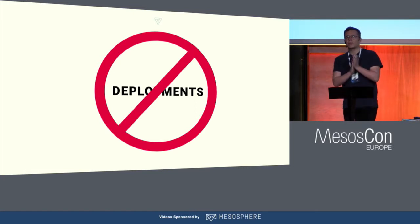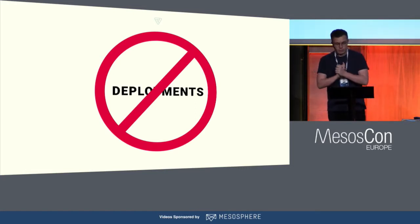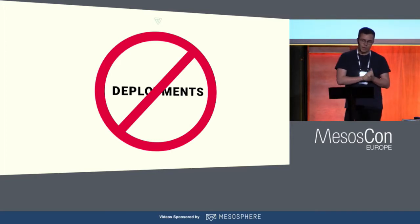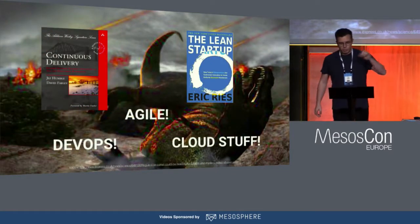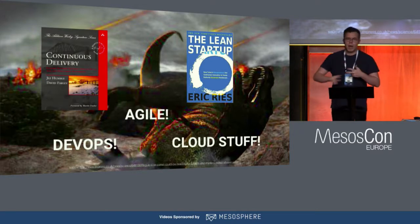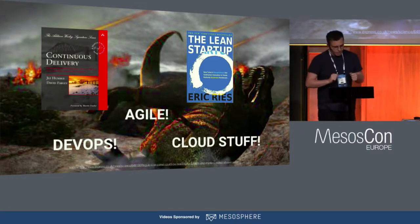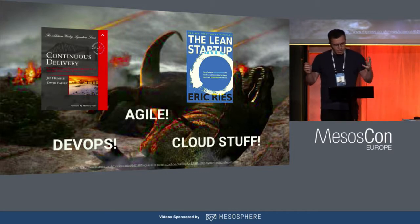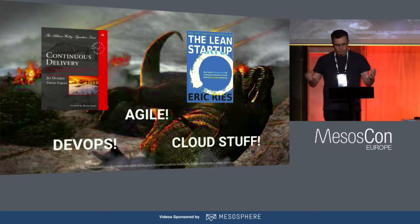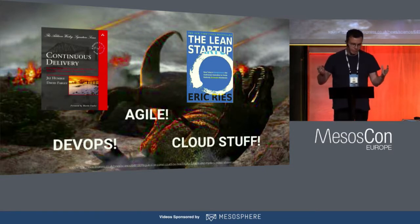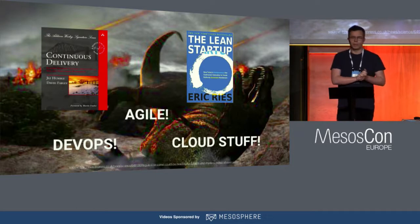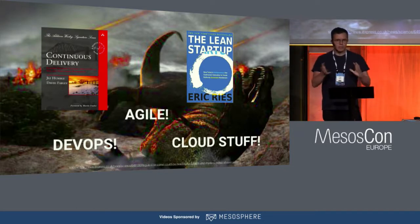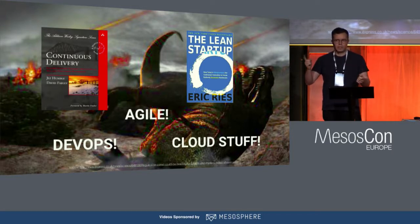And then, as we fast forward to 2011 — so about 10 years later — disaster strikes. Multiple times. Like a meteor shower: continuous delivery, lean startup, DevOps, agile, cloud stuff. They're all telling us that everyone should be deploying everything all of the time. Companies like Facebook and Etsy started claiming they deploy 50 times per day. It's completely normal. This was a time that Heroku got very popular and showed us that you could deploy something with just one git push command.